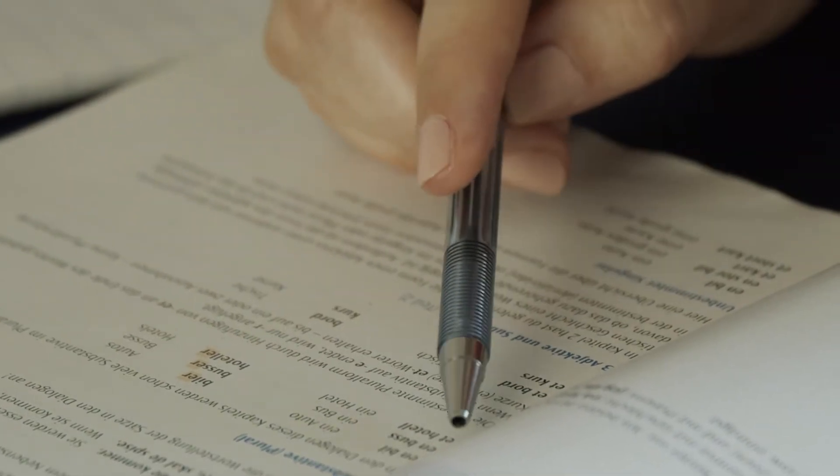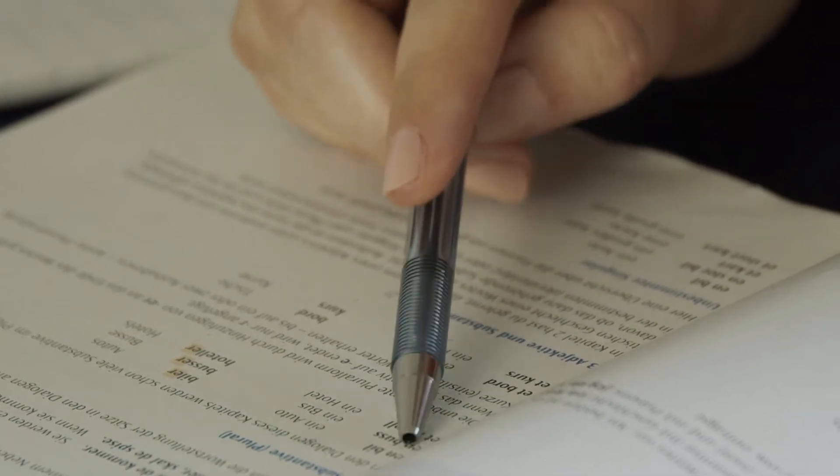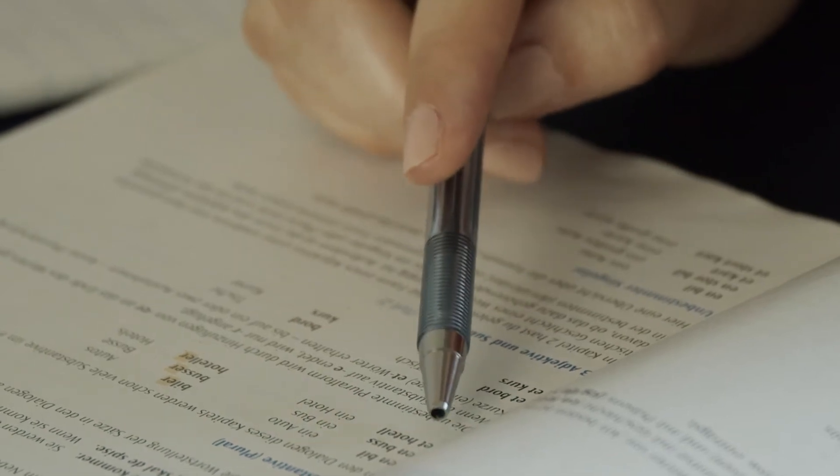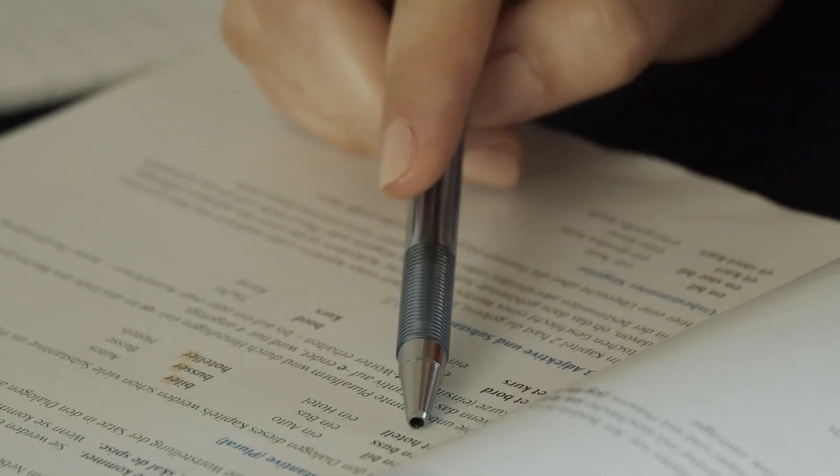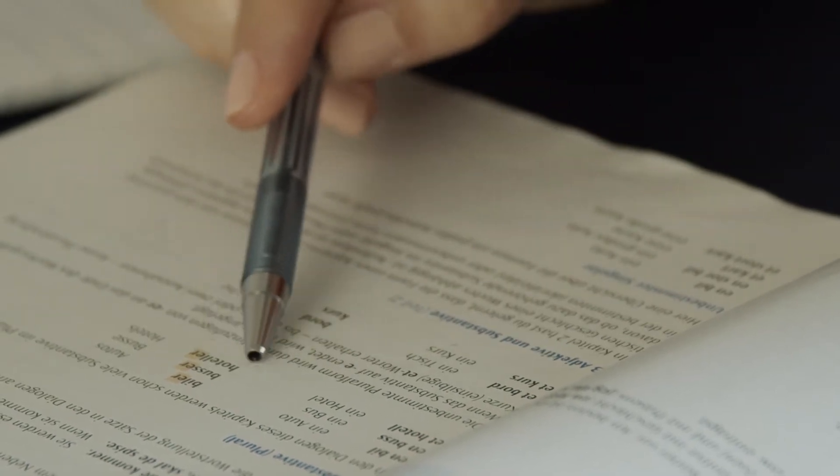We also have a different type of article, well it's the same kind but it looks a little different. Instead of en, it's et. Et hotell, but the plural looks the same, hoteller.